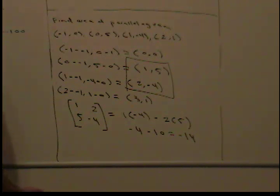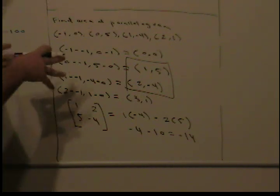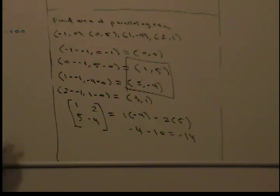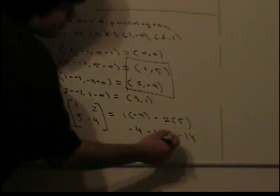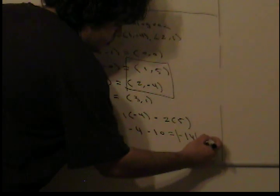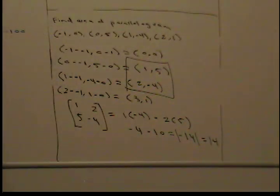And some of you may be wondering, how can an area be negative? Well, in order to use the determinant to find the area or volume of a region, it's always the absolute value of the determinant. So, the absolute value of this is just 14. So, this is the area of the parallelogram.